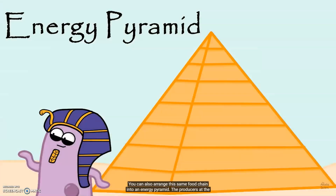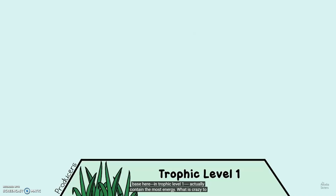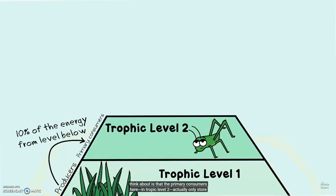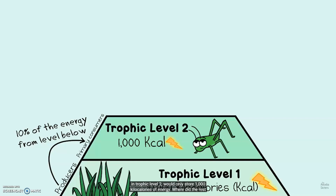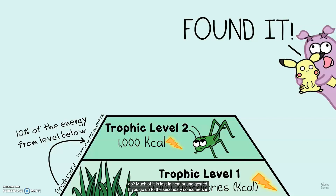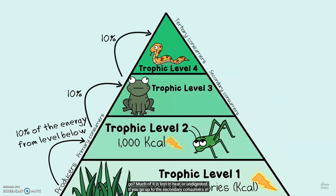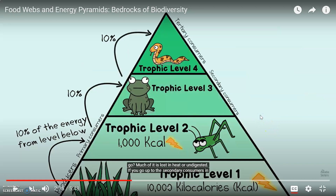You can also arrange this same food chain into an energy pyramid. The producers are at the base, in trophic level 1, and they actually contain the most energy. What is crazy to think about is that the primary consumers, in trophic level 2, actually only store 10% of the energy from the producers. Let's say the plants had 10,000 kilocalories — that's an energy unit. Well, the primary consumers in trophic level 2 would only store 1,000 kilocalories of energy. So where did the rest of the energy go? Much of it is lost to heat or is undigested. The energy pyramid is just another way to display the transfer of energy, just like a food chain.